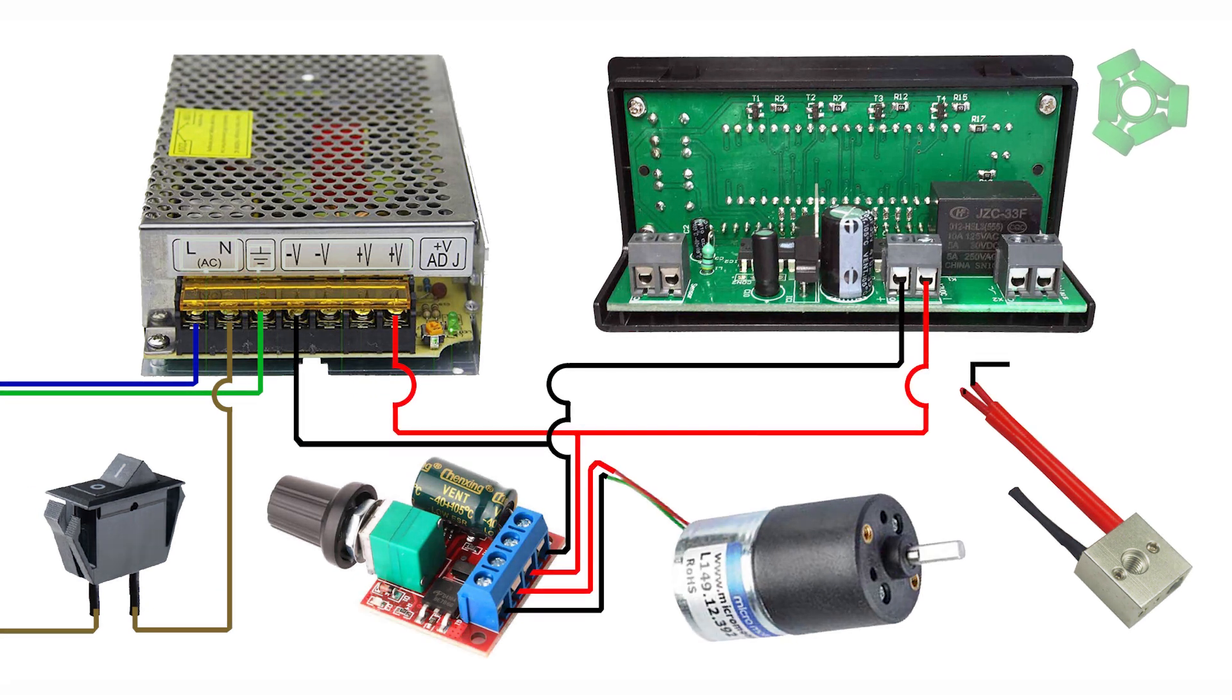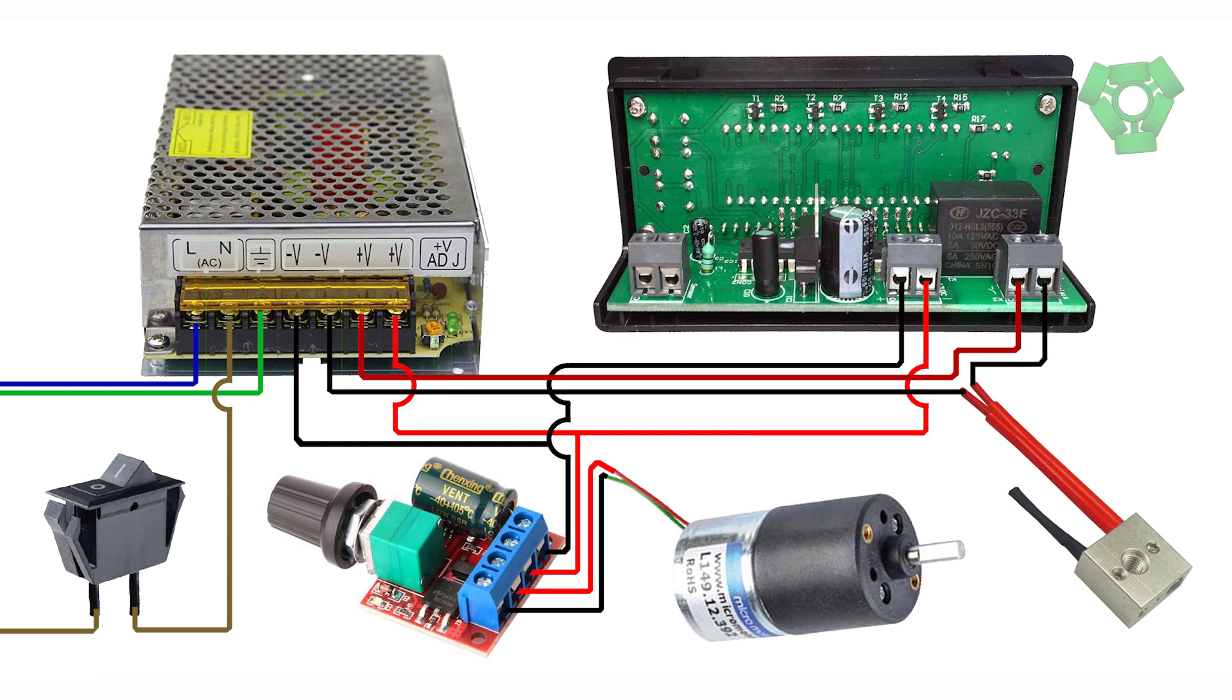Connect one wire from the thermistor to the thermal controller's port marked Relay. The other wire from the thermistor to one of the remaining two 12 volt output ports on the power supply. And then a final wire to connect the final port of the relay on the thermal controller to the final output port on the power supply.